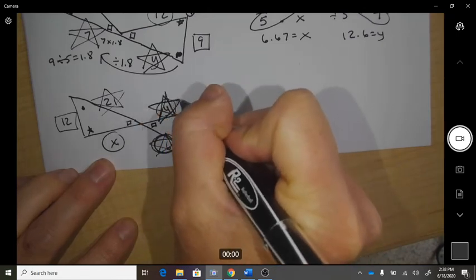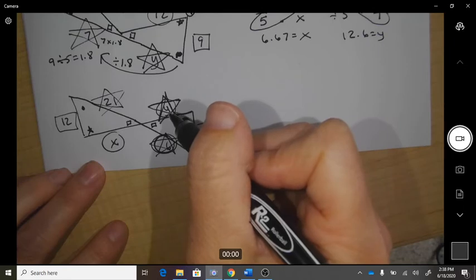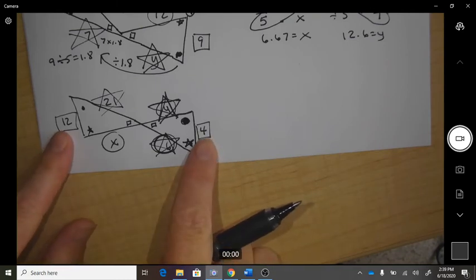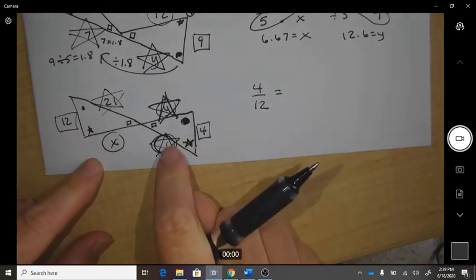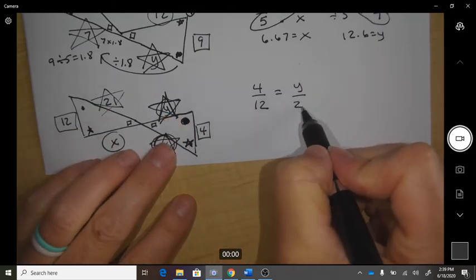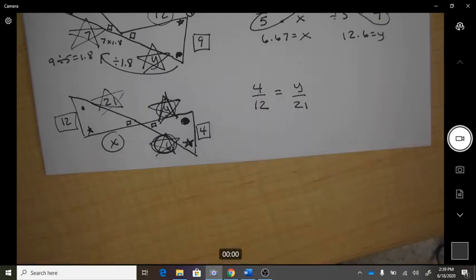Okay, so what matches each other? The 4 to 12 would be the same as y would be to 21. So I could multiply 4 times 21 divided by 12 and get 7.